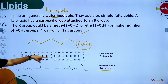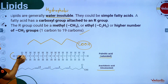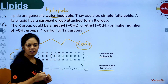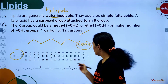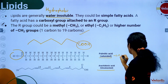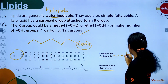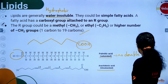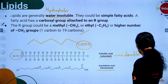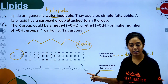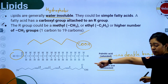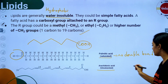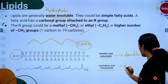Looking at the picture — you can see the carboxylic group attached. Can you see any double bond? No — that is saturated: no double bond. Unsaturated fatty acids contain double bonds. This is what we call unsaturated.